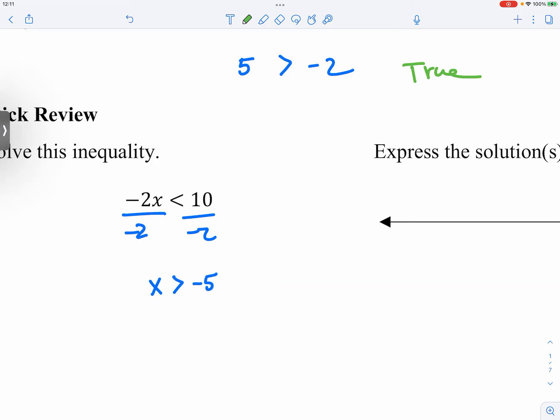So now, assuming that we do not know that we have to flip the sign, okay, just pretend that we don't know we have to flip the sign. And we're going to multiply both sides by negative 1.